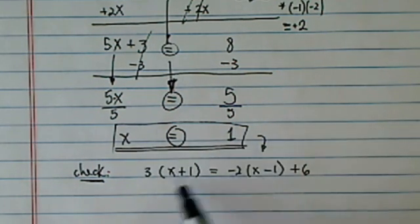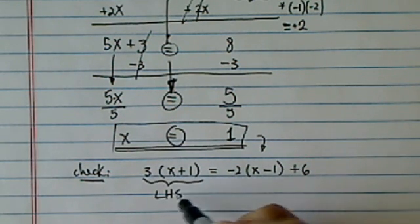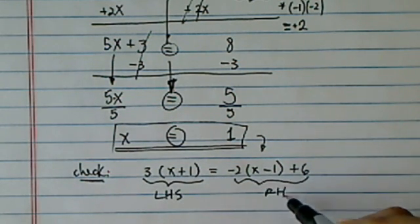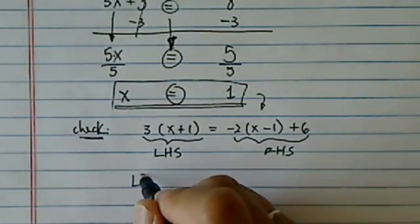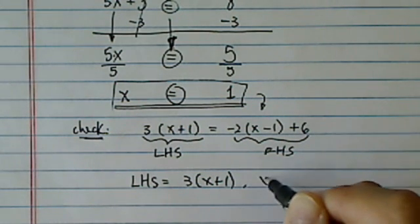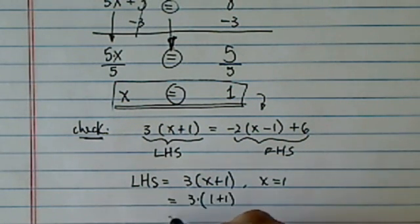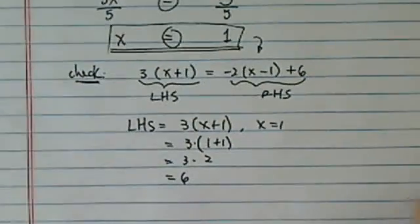So we found this mystery number 1, and the thing is to say, if X is equal to 1, if I plug this one in there, then this hand, left-hand side, ought to equal to right-hand side. Well, let's take a look, see if that's true. Okay, left-hand side is equal to 3X plus 1, and since we know X is equal to 1, let's plug it in there.